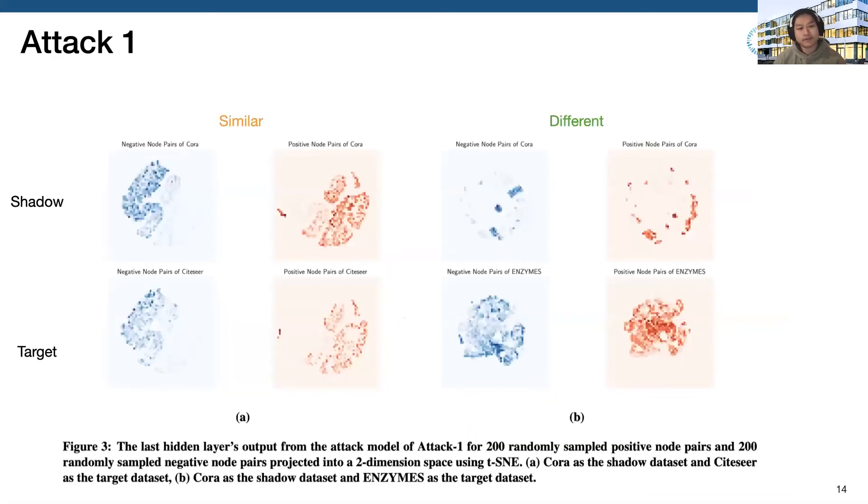To better understand this, we extract the attack model's hidden layer output for positive node pairs and negative node pairs and project them into a two-dimensional space using t-SNE. Figure 3a is the case when the shadow dataset comes from a similar domain, and figure 3b is the case when shadow dataset comes from a different domain. The blue color is the negative node pair, and the red color is the positive node pair. So here we can see that if the shadow dataset comes from a similar domain, for both negative pairs and positive pairs, they actually lie in very similar regions. However, if these two datasets come from different domains, both negative pairs and positive pairs actually lie in very different regions. This gives us a hint that we can conduct more effective transfer attacks if we have a shadow dataset that comes from a similar domain.